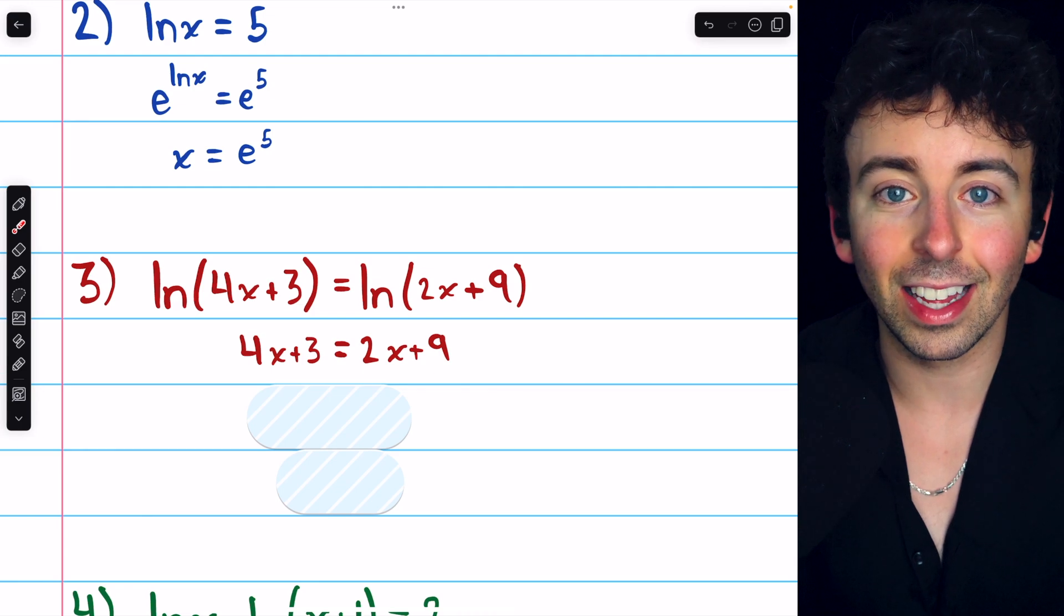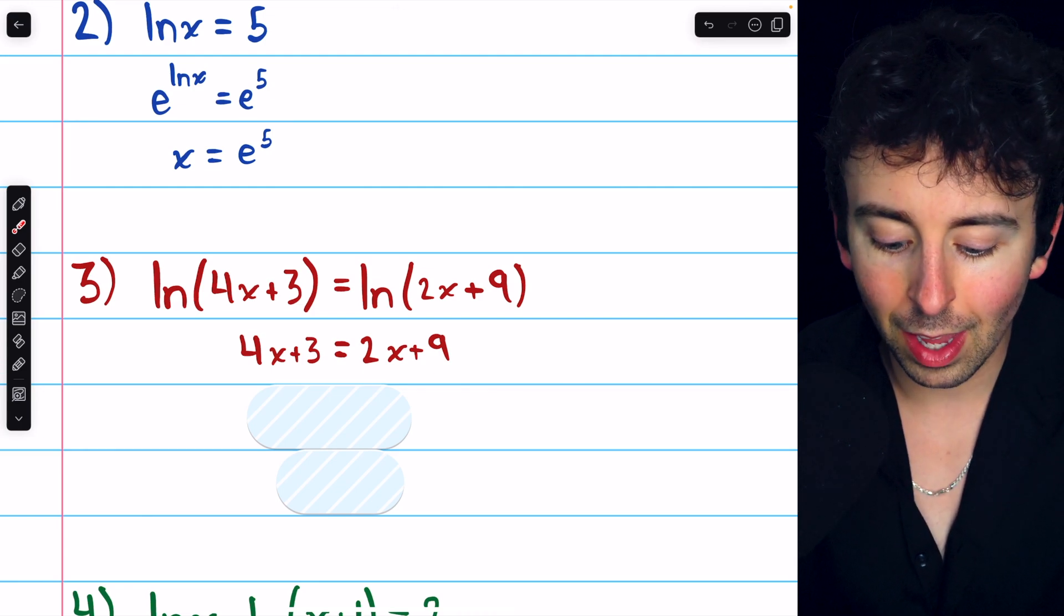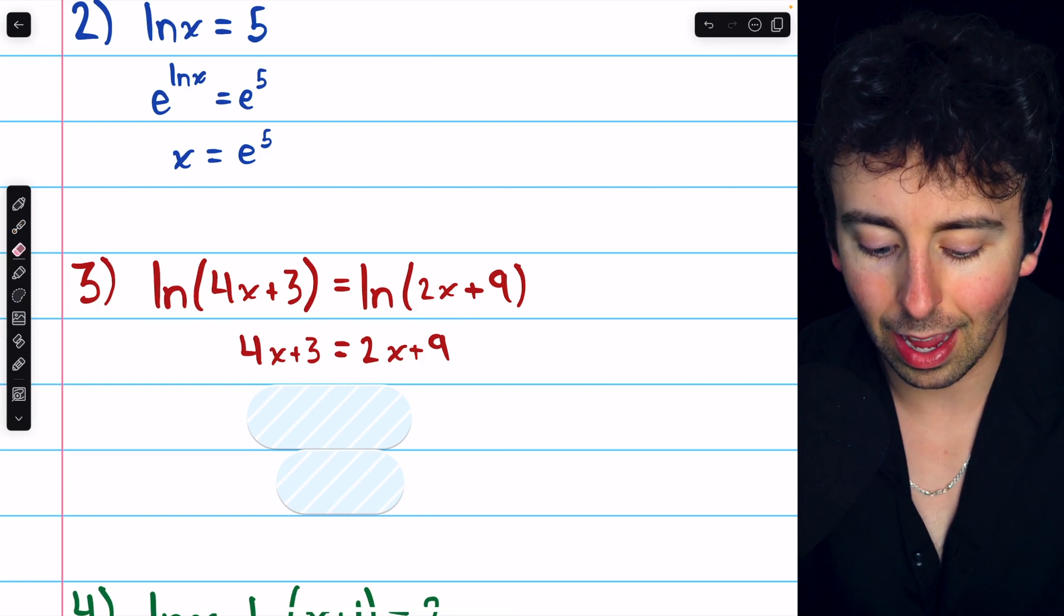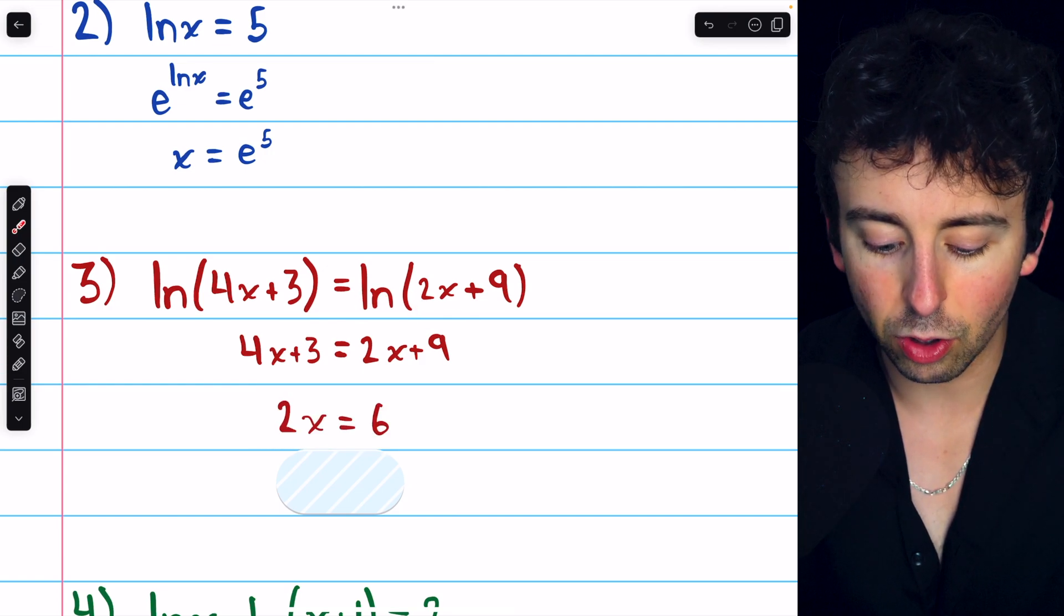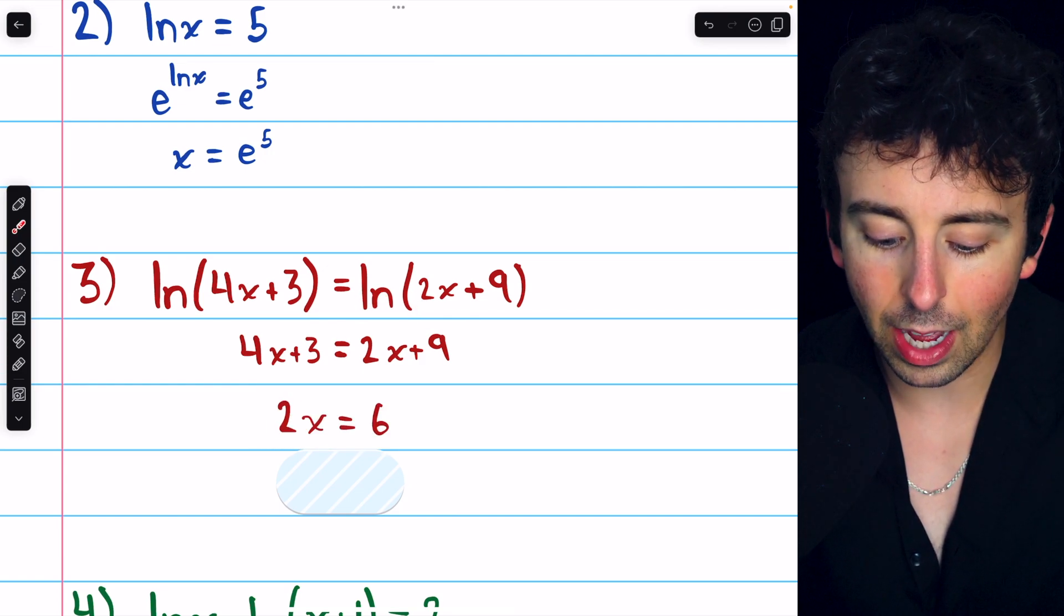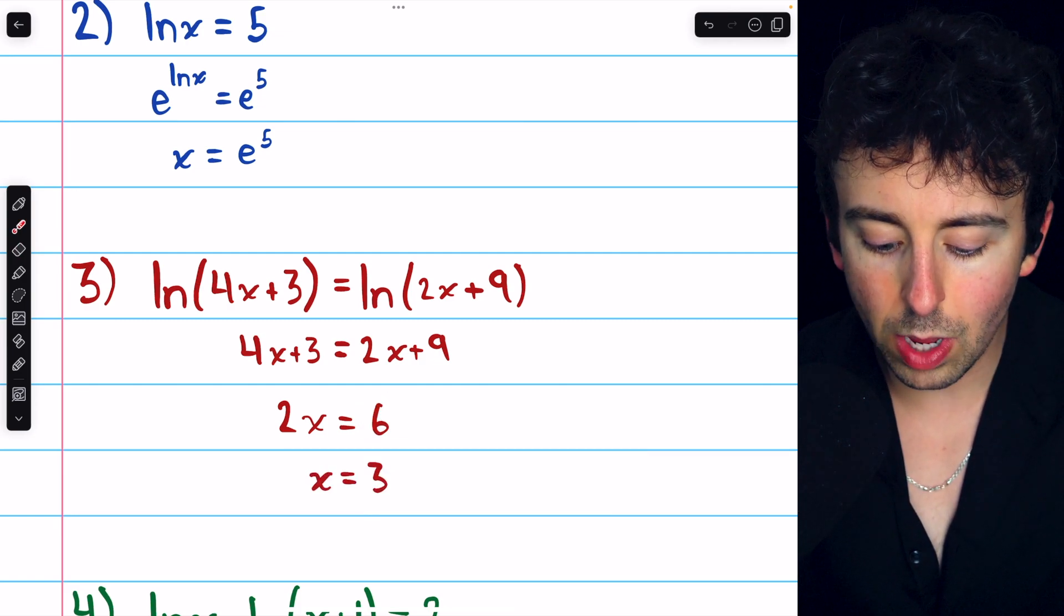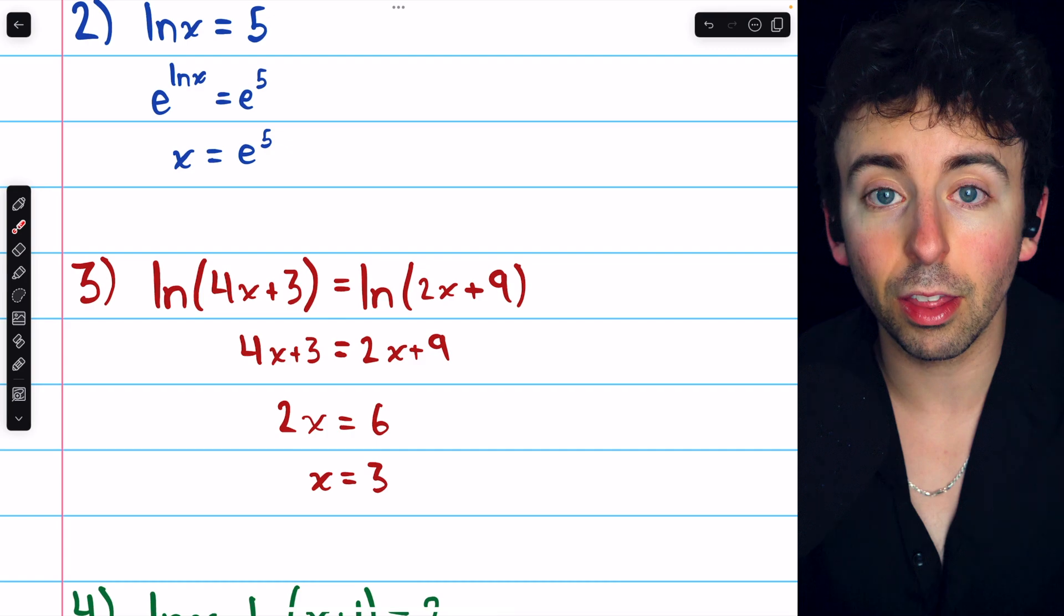Surely, you've solved things like this a million times before. Just subtract 2x from both sides and subtract 3 from both sides. Then on the left we have 2x, and on the right we have 9 minus 3, or 6. Finally, dividing by 2, we have x equals 3.